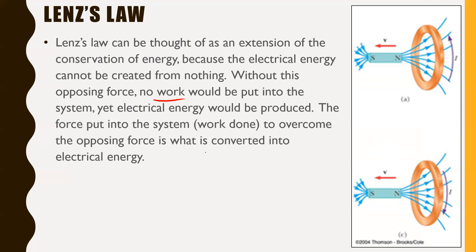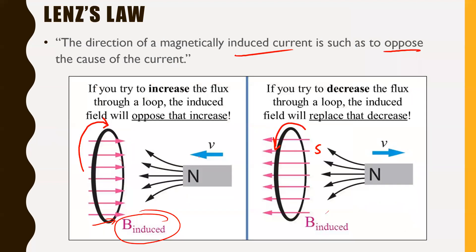The bottom line: a magnet entering or leaving a coil of wire will induce a magnetic field to oppose that. If you're putting the north end of a magnet into a coil, it creates a north end trying to push it away. If you're trying to remove a magnet, there's going to be a south end trying to attract the magnet back in. It wants to oppose what you're doing — there's opposition whether you're going in or coming out.